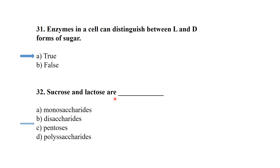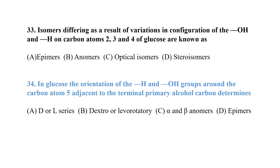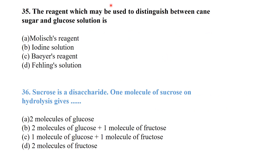Sucrose and lactose are disaccharides made up of two monosaccharides. Isomers differing as a result of variation in configuration of the hydroxyl and hydrogen groups on carbon atoms three and four of glucose are known as epimers. In glucose, the orientation of the hydrogen and hydroxyl groups around carbon atom five — adjacent to the terminal primary alcohol carbon — determines the D/L series.